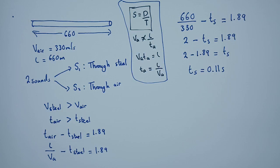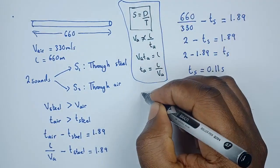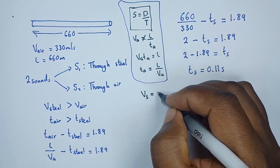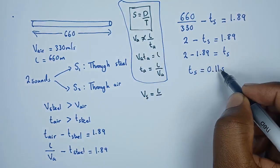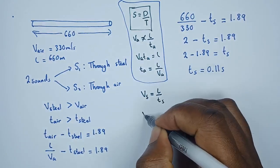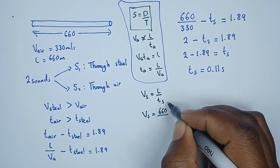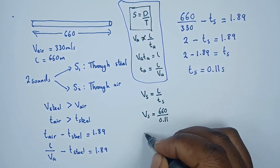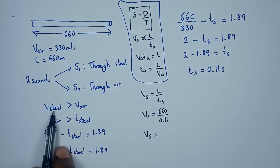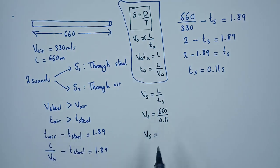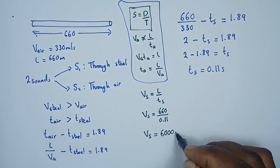Using the same formula — speed equals distance over time — the velocity in steel equals L divided by T_steel, which is 660 divided by 0.11, giving a velocity in steel of 6000 meters per second.